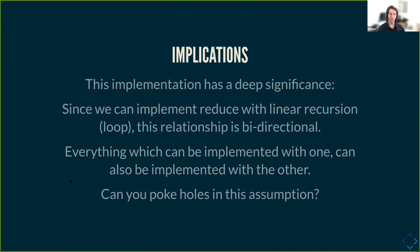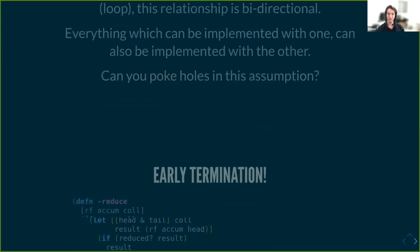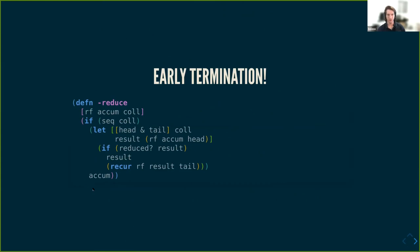There are some implications to this, but a very important one is that we can implement reduce using linear recursion — and that means loop. This relationship goes both ways: everything which we can implement with reduce, we can implement with recur, and vice versa. There is one little hole in this assumption, which is early termination, which is why Clojure gives us the reduced predicate, which allows us to break early. This covers basically everything we can do with reduce, we can do with loop.